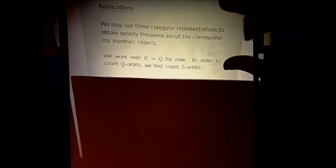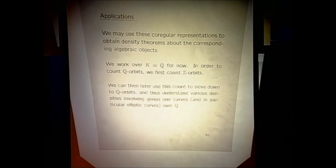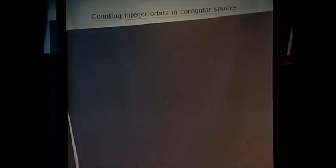We want to understand the rational orbits, but our technique of geometry of numbers naturally counts integer points. So we're going to understand rational orbits by counting integral orbits. The problem is that integral orbits and rational orbits are different — there can be many integer orbits corresponding to the same rational orbit, and it's not obvious that every rational orbit with given invariants will have an integral representative with those invariants. These are problems one has to overcome when counting rational orbits.